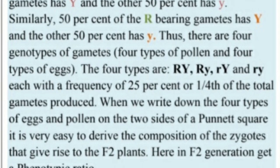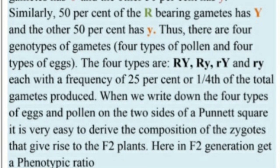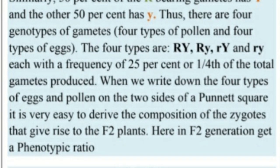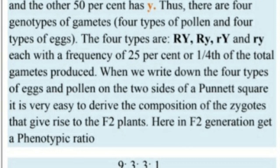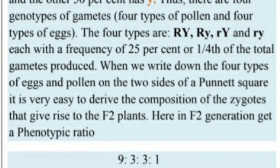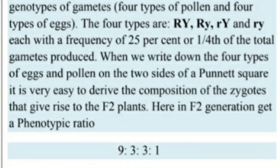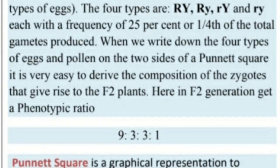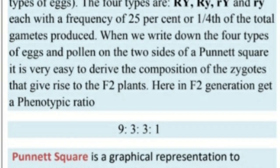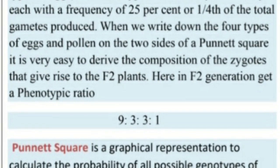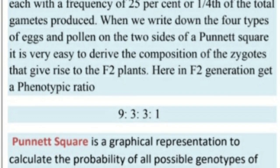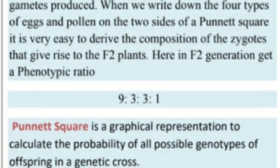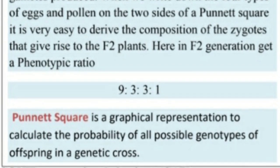The four types are RY, Ry, rY, and ry, each with a frequency of 25% (one-fourth of the total gametes produced). When we write down the four types of eggs and pollens on the two sides of a Punnett square, it is easy to derive the composition of the zygotes that give rise to F2 plants. In the F2 generation, we get a phenotype ratio of 9:3:3:1.